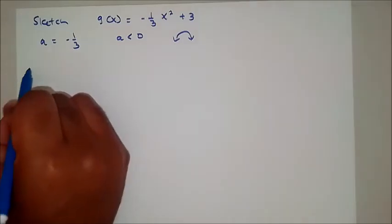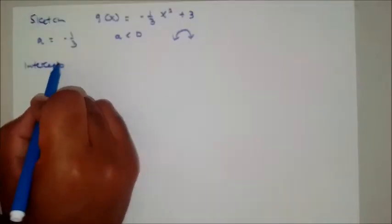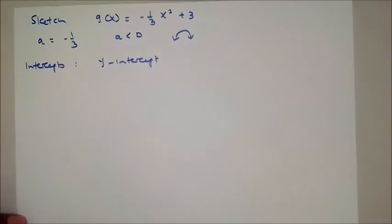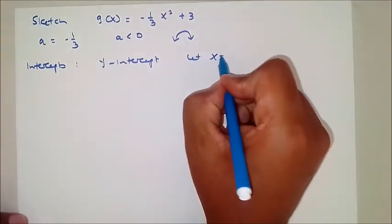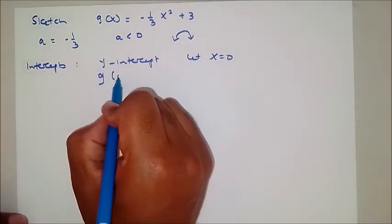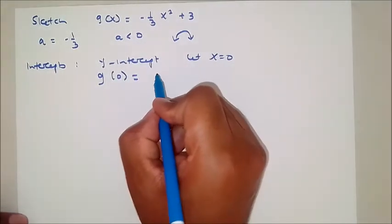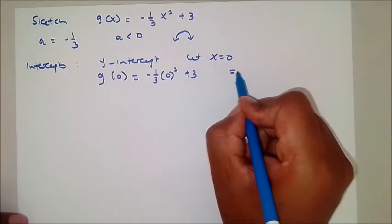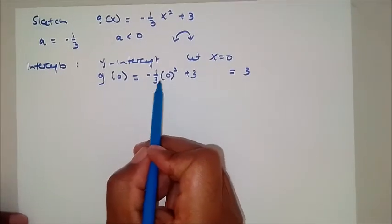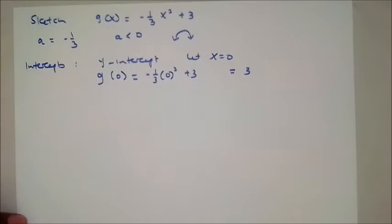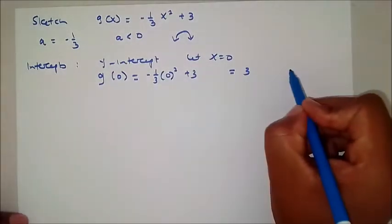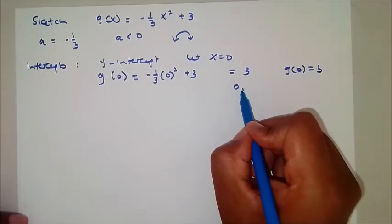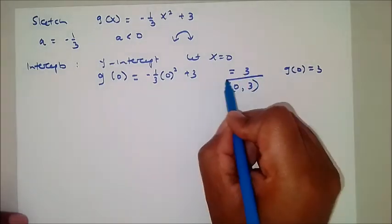Now let's find the intercepts, starting with the y-intercept. For the y-intercept, you let x equal to 0. So g of 0 equals negative 1 over 3 times 0 squared plus 3. This equals 3. So the y-intercept is (0, 3).